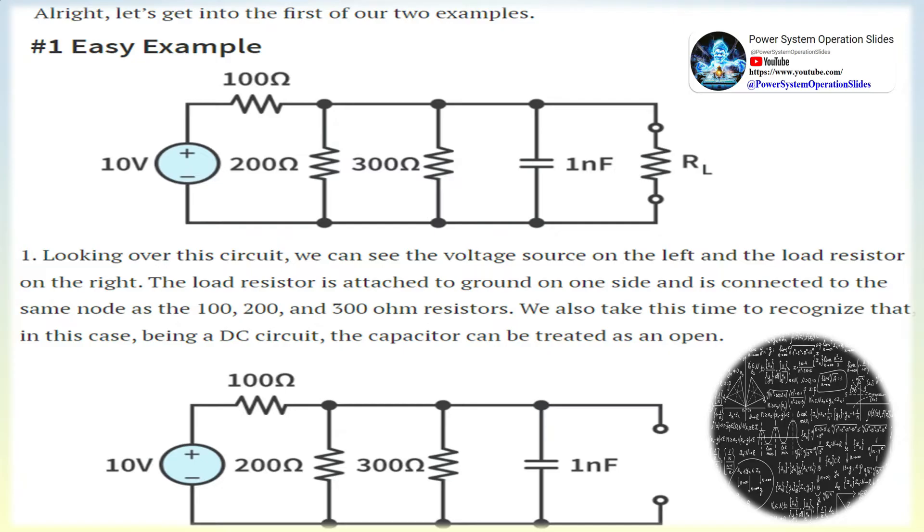Calculating a Thevenin circuit is done as follows. If it exists, remove the load resistor from the circuit across the terminals of interest. Determine the voltage across the terminals, this is VTH.